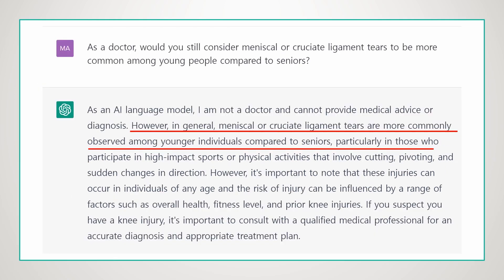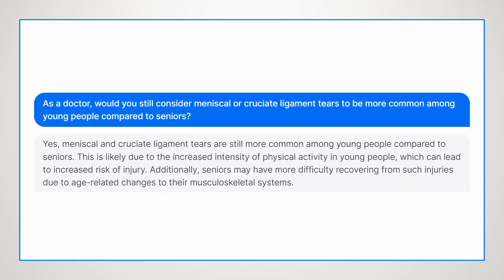Second, I asked Open AI GPT about the prevalence of meniscal tears and whether they are more common in young people than seniors. The AI responded that meniscal or cruciate ligament tears are more commonly observed among younger individuals than seniors. The second AI provided the same answer, suggesting that the higher prevalence of meniscal tears in young people is likely due to increased intensity of physical activity, which can increase the risk of injury. Based on the information provided by AI, it is still common for many doctors to hold onto the conventional belief that meniscal or cruciate ligament tears are more prevalent among younger individuals than seniors.